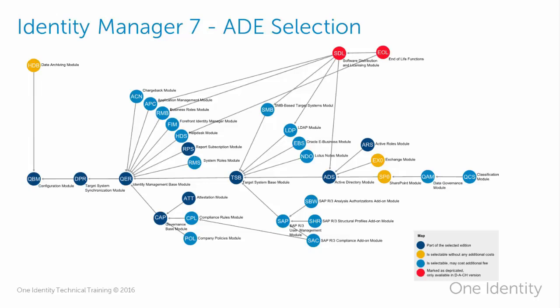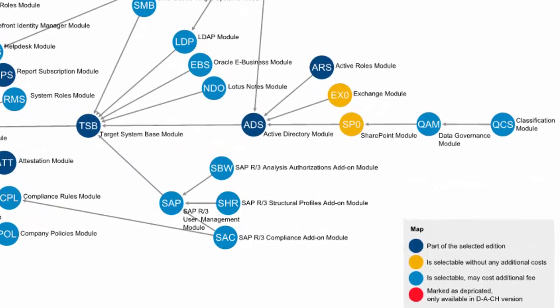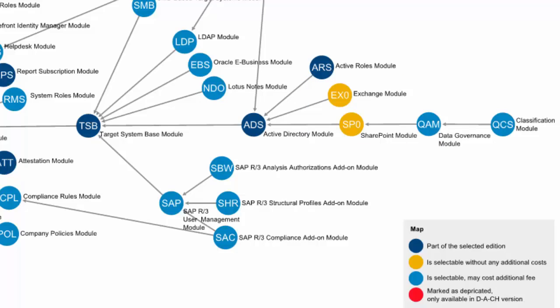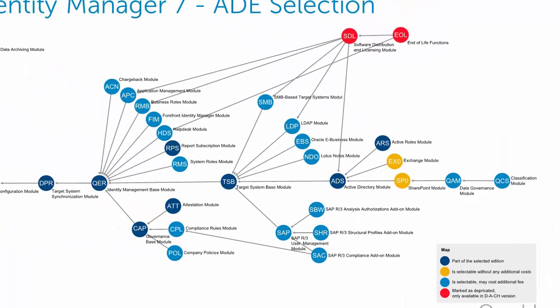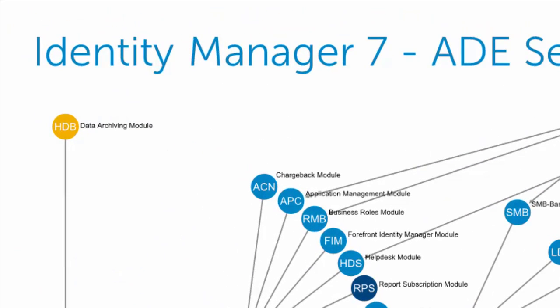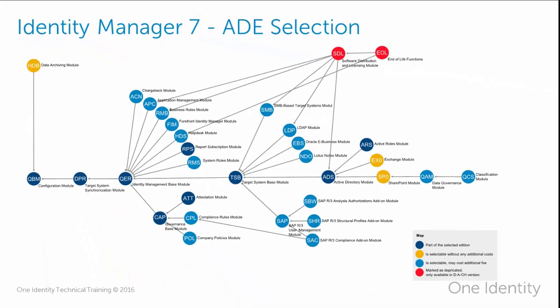The same graph exists for the Active Directory Edition. As the colors show, there are just a few dark blue modules representing the standard out-of-the-box Active Directory Edition features. There are many light blue modules indicating additional paid options, and two yellow ones: the Exchange module, which is part of the new Active Directory Edition definition, and the SharePoint module as an additional component. Both are not standardly selected but can be added during or after installation without extra cost. The red ones are again auto-selected by the system. Also included free is the data archiving module containing property logging functionality.